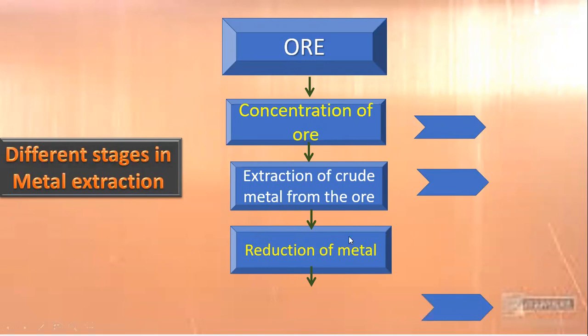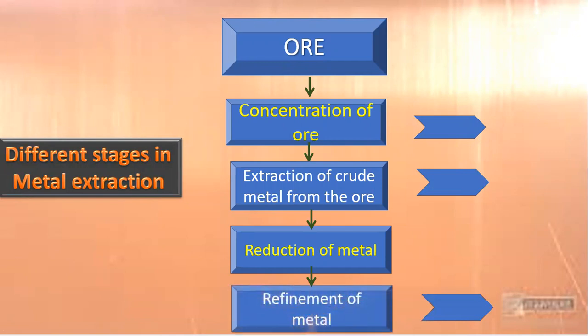High reactive metals are extracted in one way, whereas moderately reactive metals are extracted in another way, and likewise the low reactive metals that we are going to learn today. The first step is reduction of the metal, then the purification or refinement of the metal. These are the major steps involved in the extraction and purification of the metals.